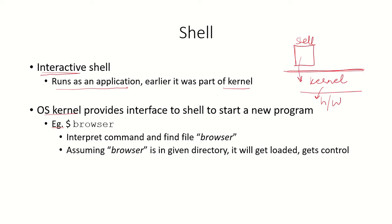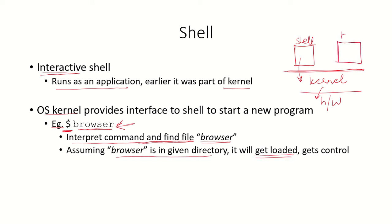The shell can interface with the kernel to start a new program or process. Suppose at the shell prompt we type 'browser'. The kernel will interpret this command, find the file browser from storage — assuming it is in the given directory since we haven't specified the path — and the browser file will get loaded and take control.